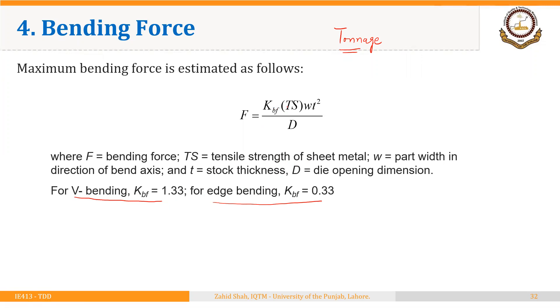That is multiplied by the tensile strength of the sheet metal, W is the part width in direction of the bend axis, t is the thickness of the blank, and D is the die opening dimension.